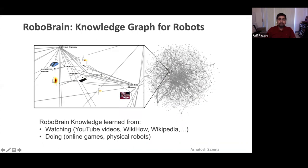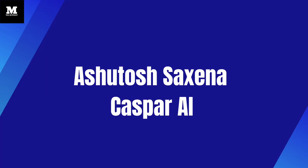He has over 12,000 citations in the area of artificial intelligence, with numerous awards including SF Business Times 40 Under 40, TR35 Innovative Award by MIT Technology Review, and many more. With that, I would like to invite Ashitosh to MarkTechPost — welcome, Ashitosh.